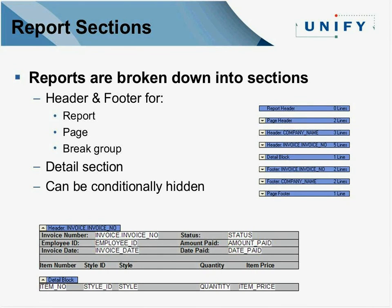All reports have a few sections, and depending on whether you're doing control break processing, you may have multiple additional sections. These sections happen based on where you are in the processing of the report. You always have a report header, report footer, page header, and page footer — for logos, headings, column headings, page numbers, and dates. With control break processing you'll have headers for each break item, such as company name or invoice number, and at the lowest level you have the detail items — the actual line items in our company/invoice example.